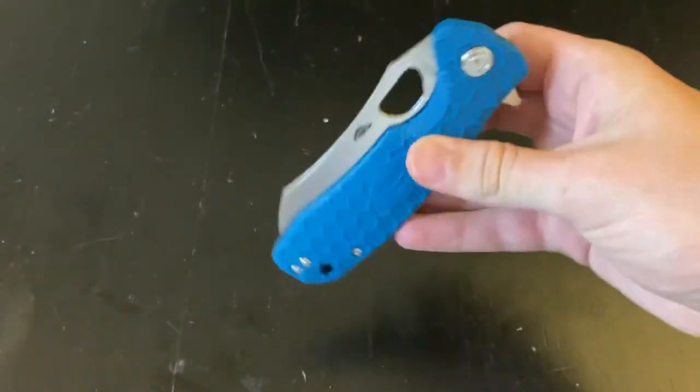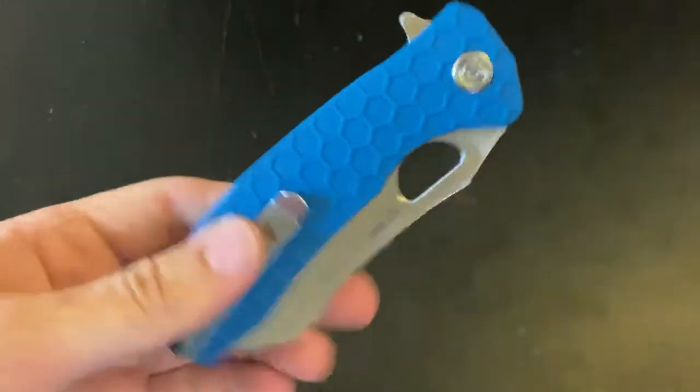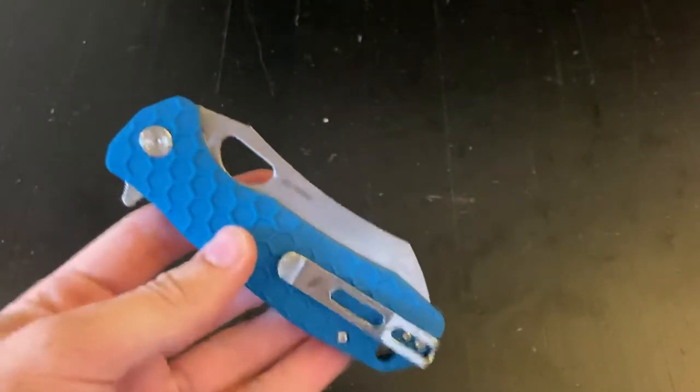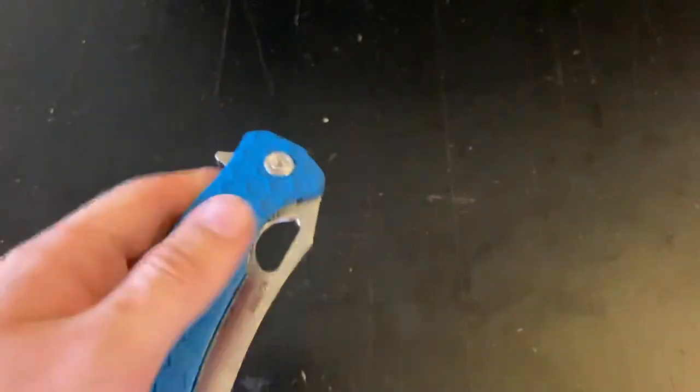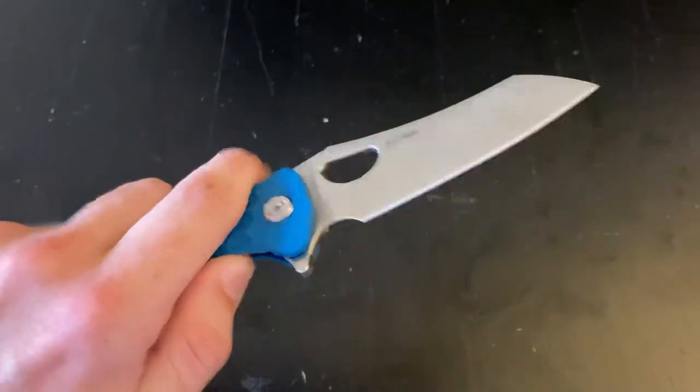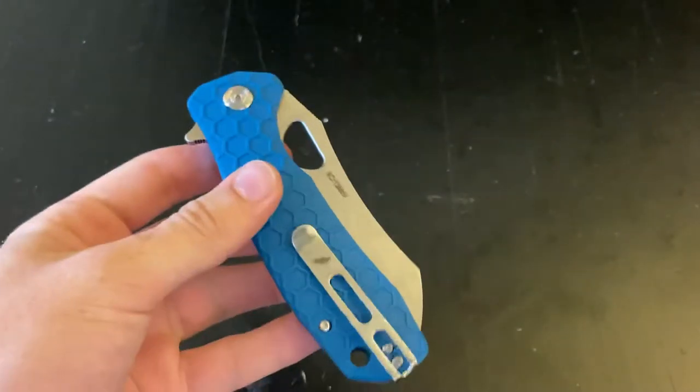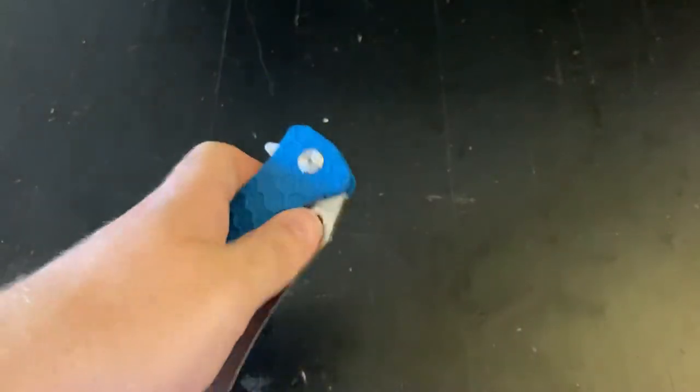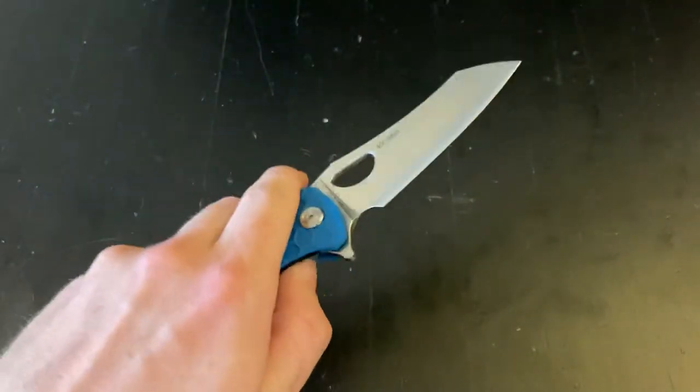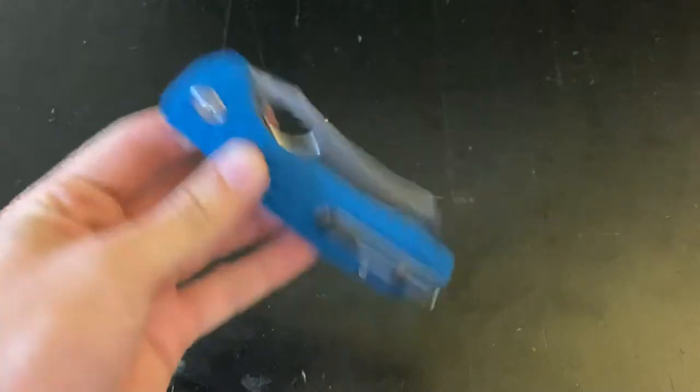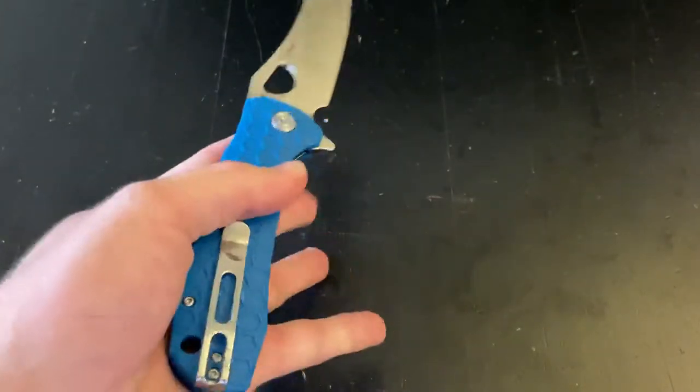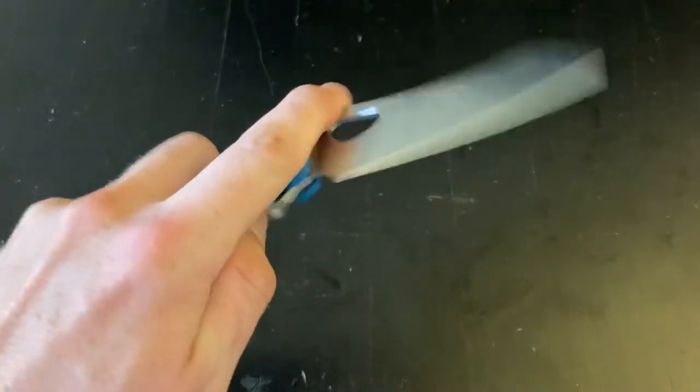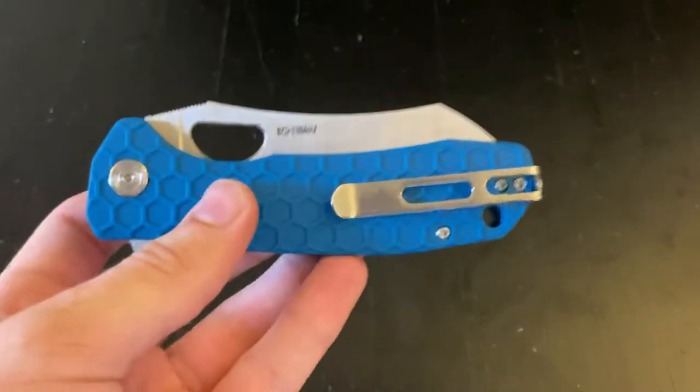I'd say that if I were to buy one new outright, I would definitely get the D2 version. This 8CR 13MOV version costs about I think $38, while the D2 version is like $62. So it's a substantial price jump. I guess considering the fact that, well, if you have a Honey Badger, the main reason that you might have it is just how fun it is to play with and flip open. It's almost like the most improved version of a fidget toy ever.